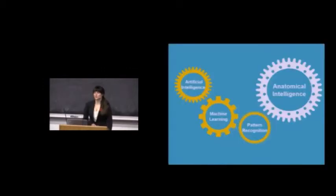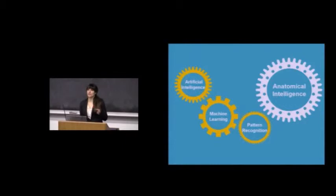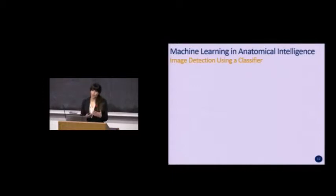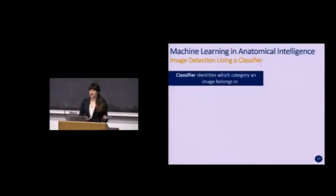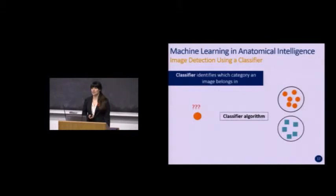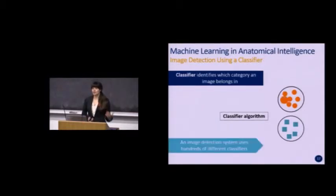Anatomical intelligence takes the concepts of machine learning and pattern recognition to facilitate the process of medical imaging. To orient the user within the image or detect the landmark of interest, the system must first recognize what's being imaged, and it does this using a classifier. A classifier, in the simplest terms, identifies which category an image belongs to — given an unknown object, a classifier algorithm, and two potential categories, it sorts the object into the category with similar characteristics such as color and shape. In reality, an actual image detection system would use hundreds, if not thousands, of different classifiers.